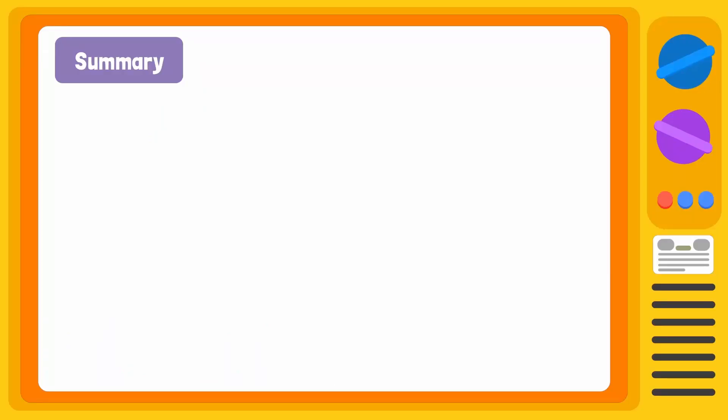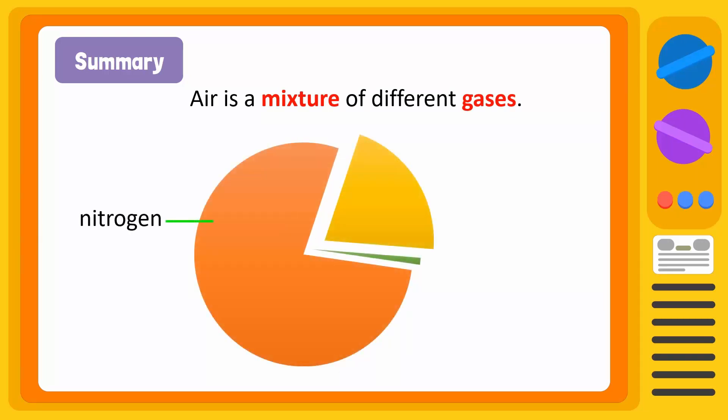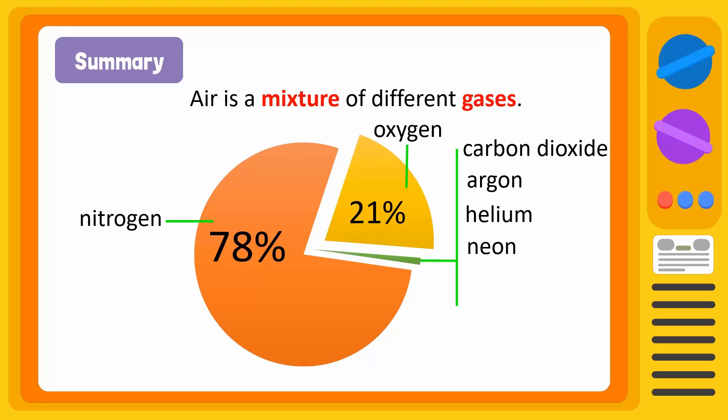Let's recap. Air is a mixture of different gases. Two major gases of air are nitrogen and oxygen. Air comprises 78% of nitrogen while oxygen makes up 21% air. All other gases such as carbon dioxide, argon, helium, neon, hydrogen, and water vapor make up only 1% of air.